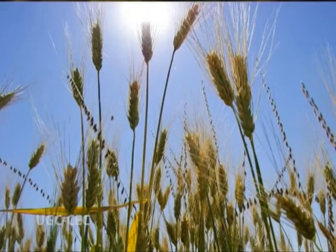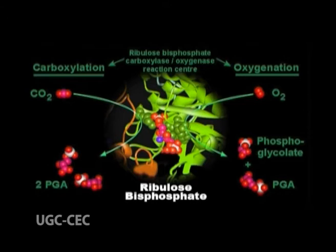In addition, rubisco has a higher affinity for oxygen when temperature increases, which means that C3 plants use more energy for photorespiration at higher temperatures. The desired reaction is the addition of carbon dioxide to RuBP, that is carboxylation. However, approximately 25% of reactions by rubisco instead add oxygen to RuBP — that is oxygenation — producing a product that cannot be used within the Calvin-Benson cycle.